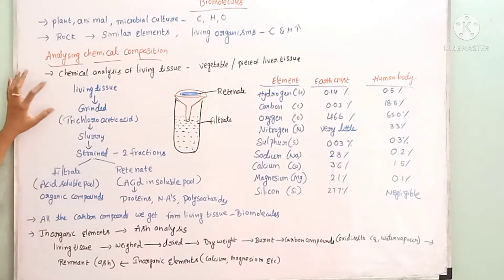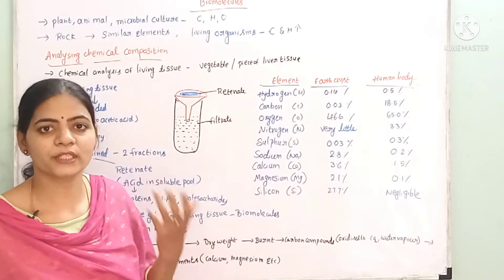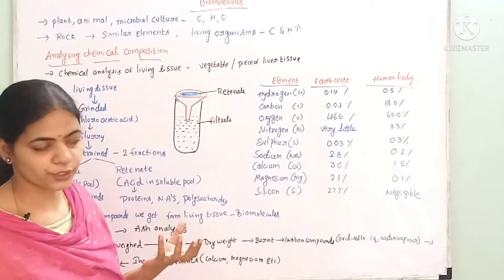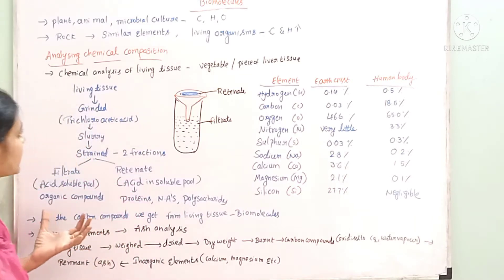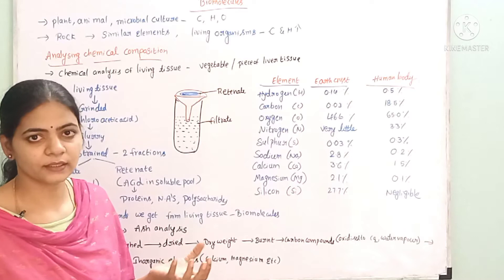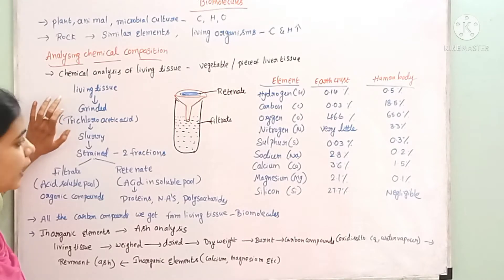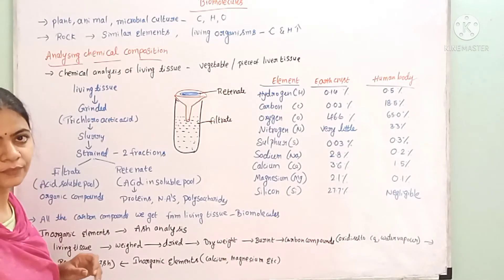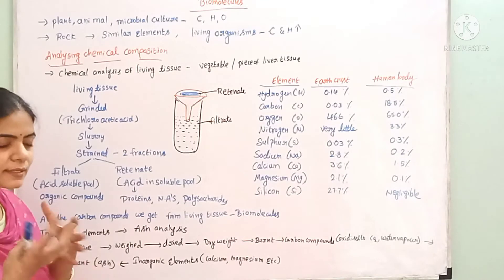The chemical composition of compounds can be analyzed. We perform chemical analysis on plant tissue, leaf, fruit, vegetable, honey, and animal tissue such as liver tissue. This is done using a mortar and pestle in the laboratory. Living tissue is treated with trichloroacetic acid.